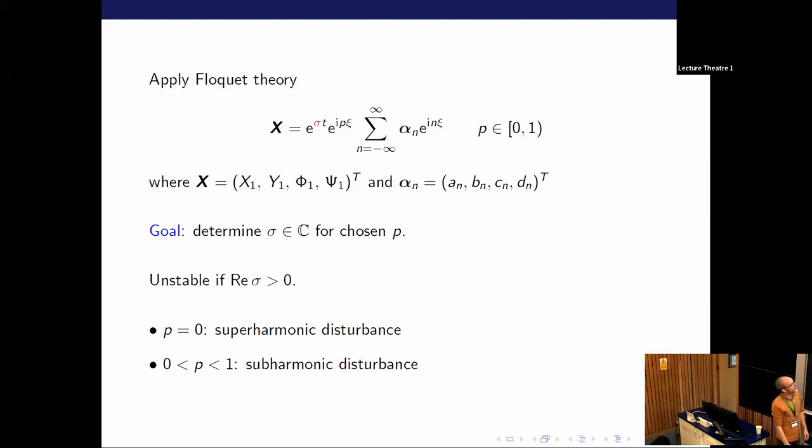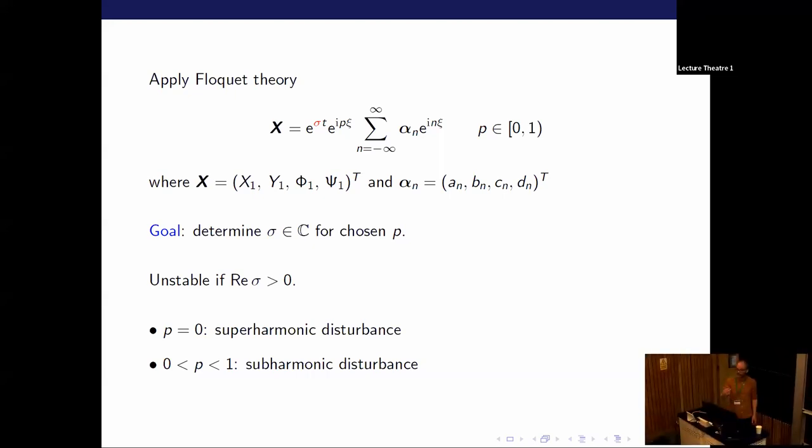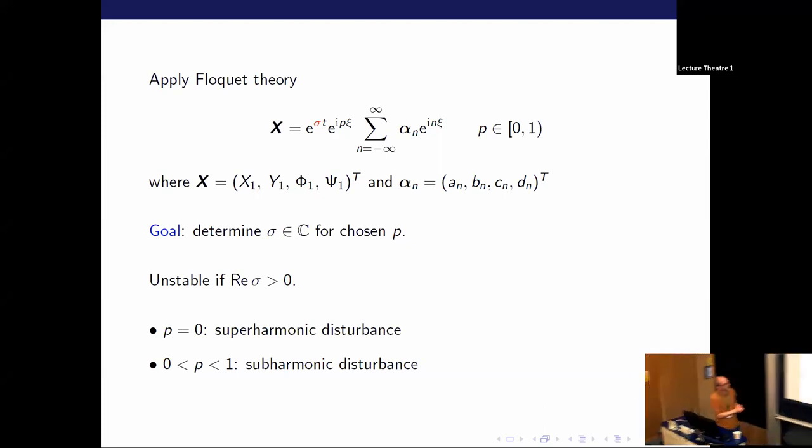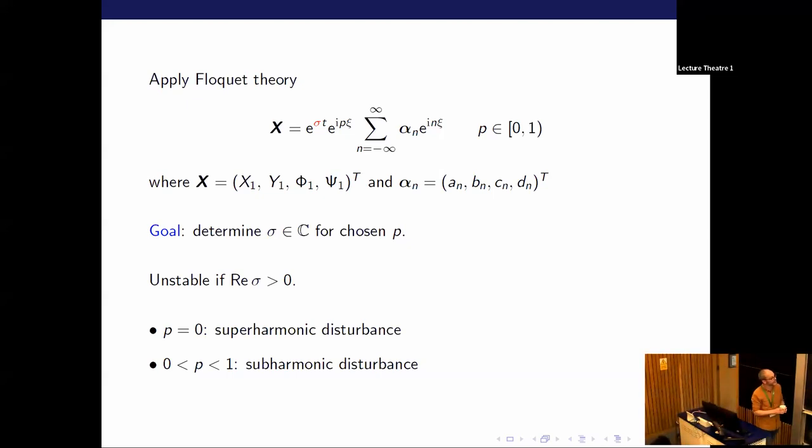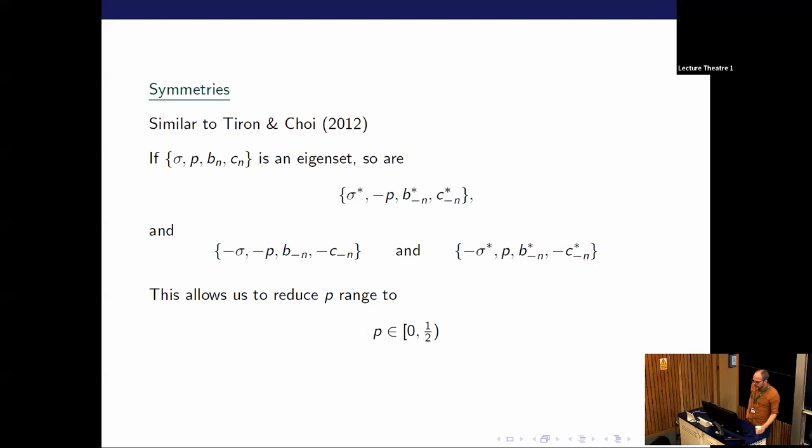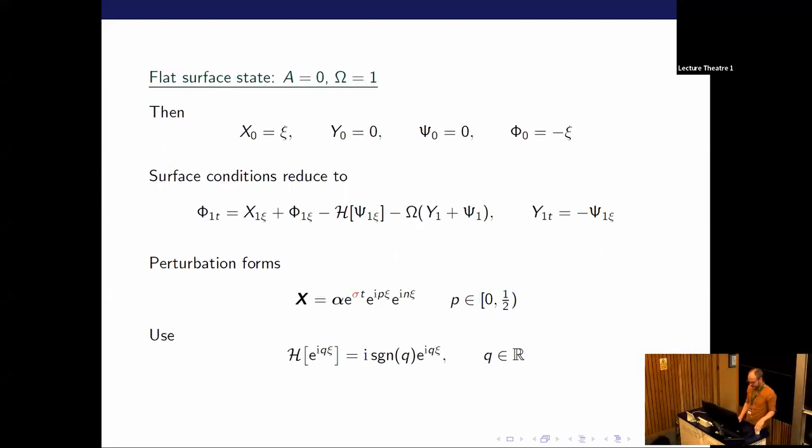That leads you to the ansatz written at the top of the page. Notice this little p constant just in front of the sum. That is what designates whether we're looking at superharmonic or subharmonic perturbations. So p equals 0 is superharmonic, p between 0 and 1 is subharmonic. The aim of the game is to determine sigma, and in particular to see if it's got a real part. Sigma will be complex in general the way that this is formulated. I want to know is the real part of sigma greater than 0, in which case I have instability. Now there's some symmetries in this problem. This is very similar to what was pointed out by Tiron and Choi in 2012 for the Crapper project, looking at the stability of Crapper waves. There are these nice symmetries in the stability equations which basically means you can reduce the search for p or the range of p that you need to consider down from 0, 1 to 0, half.